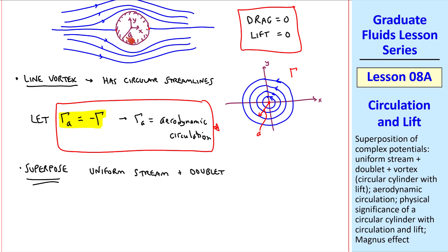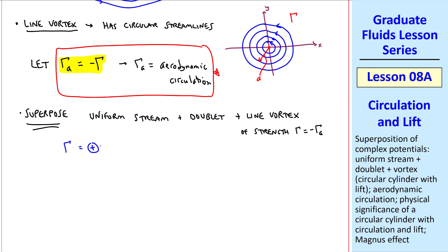So let's superpose a uniform stream, plus a doublet, as we did up here, plus a line vortex of strength gamma equal negative gamma A. Keep in mind that gamma is positive counterclockwise, and gamma A is positive clockwise. Some textbooks change the sign of gamma when dealing with aerodynamics, but I find that confusing and can lead to negative sign errors. That's why I created this aerodynamic circulation.